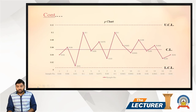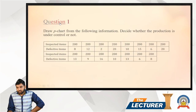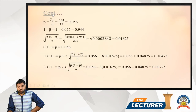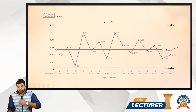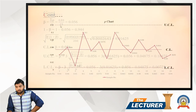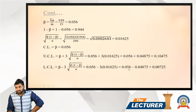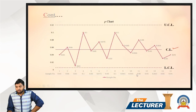On the chart table we first plot the central line at 0.056, then the upper control limit at 0.10475, and the lower control limit at 0.00725. We mark sample numbers 1 through 15 on the x-axis and plot each p value on the chart.